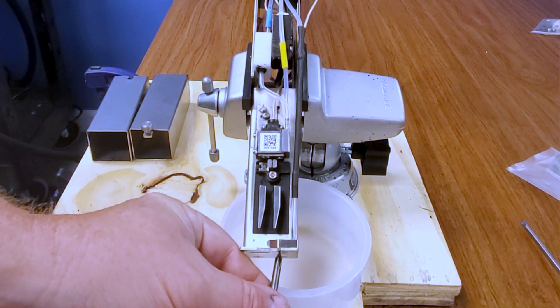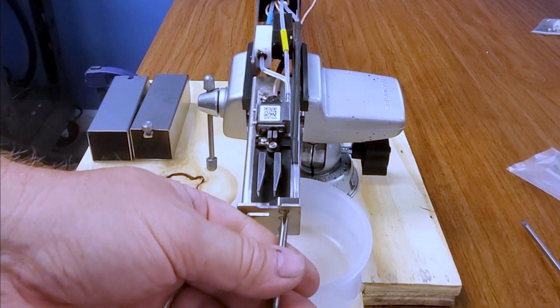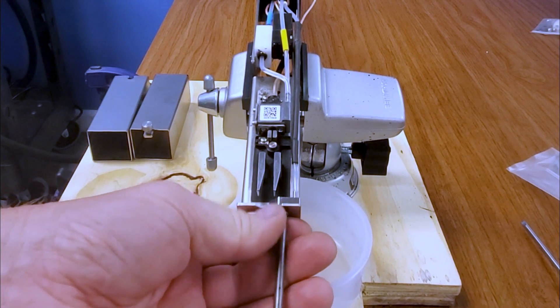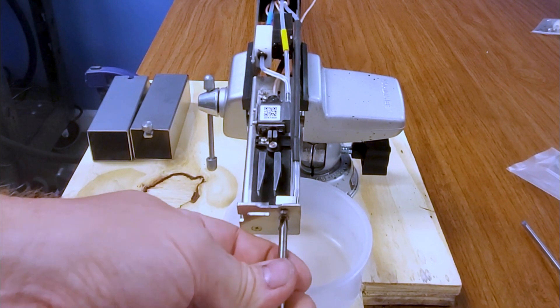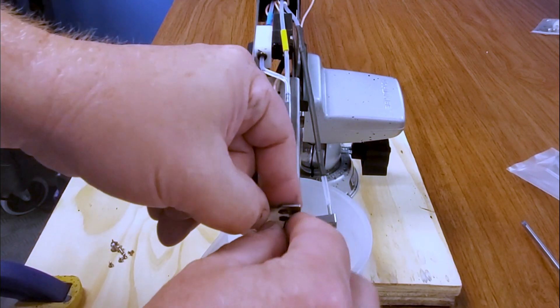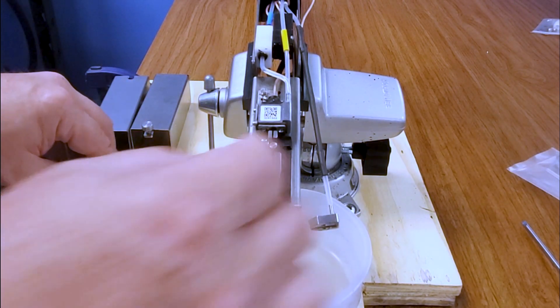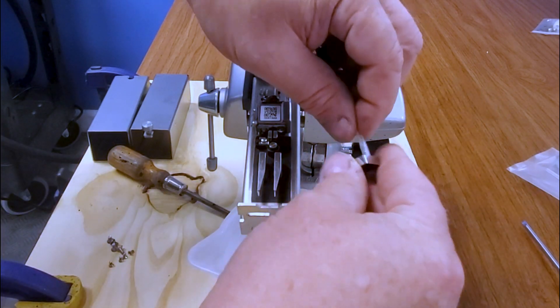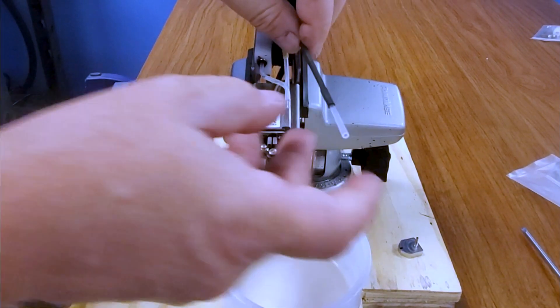Next thing we're going to be doing is removing the two screws from the bottom of our gutter. And now our gutter is loose and we can go ahead and remove the tube from the gutter. Just pull it off and put that to the side.